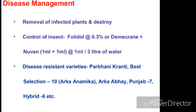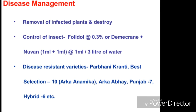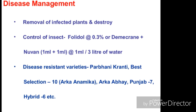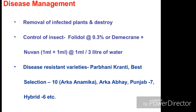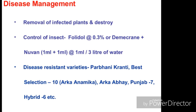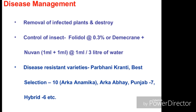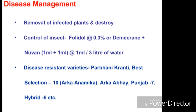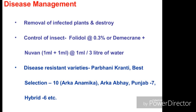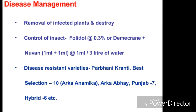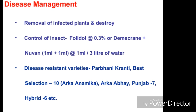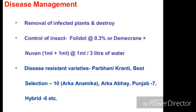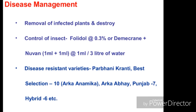Now we come to the part of disease management. First is removal of infected plants and destroying them. Second, breeding should not happen. Third, control of insects — you can use Folidol 8.3% or Demecron, 1 ml per liter of water, and you can also mix it in 3 liters of water.